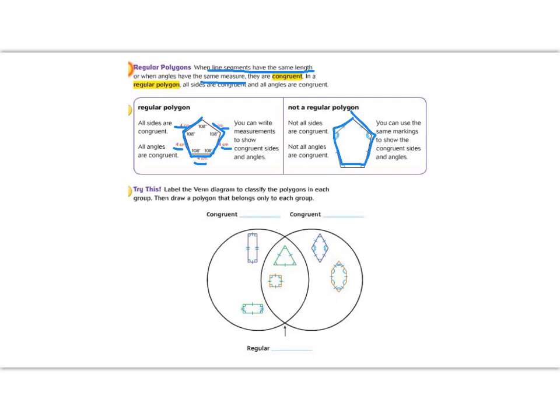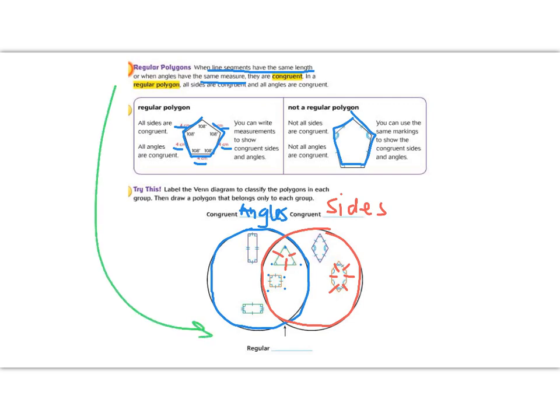Alright. So we're looking for congruent things. So if we look at this circle here, we want to notice what is congruent about all the things in this circle. Well, when I look at this circle, I notice that every corner, every vertice has the same markings. And that must mean that they are all congruent. So on this circle, we have congruent angles. Alright, now let's look at this circle. Well, this time I'm seeing that all the sides have these markings that show me they are the same. So all of the ones in this circle are congruent sides, which means that the ones in the middle have congruent sides and congruent angles, which means that they are regular polygons.